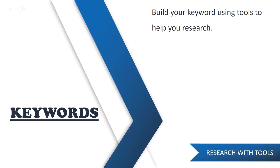That's the manual search. You can also just brainstorm other potential keywords like 'copper bracelet for wrist pain.' So now let's move on to using tools for keyword research.